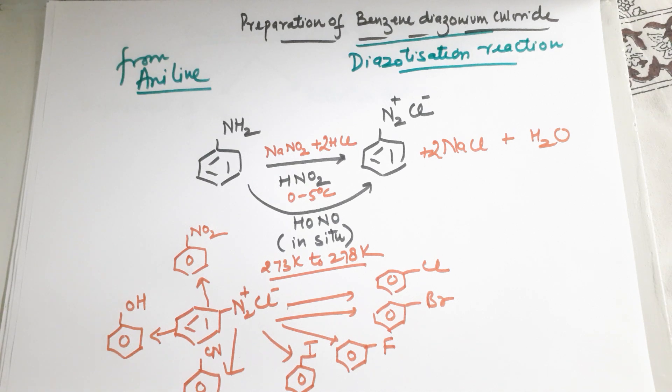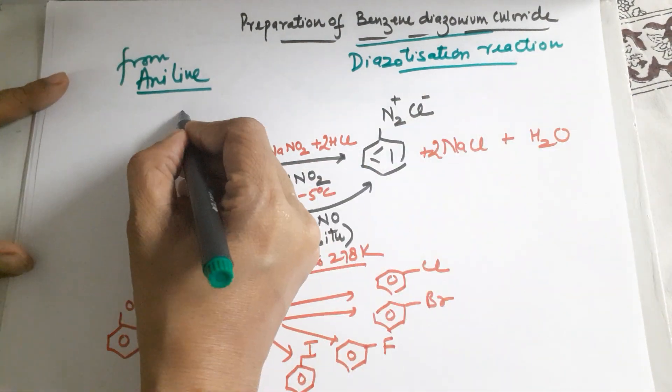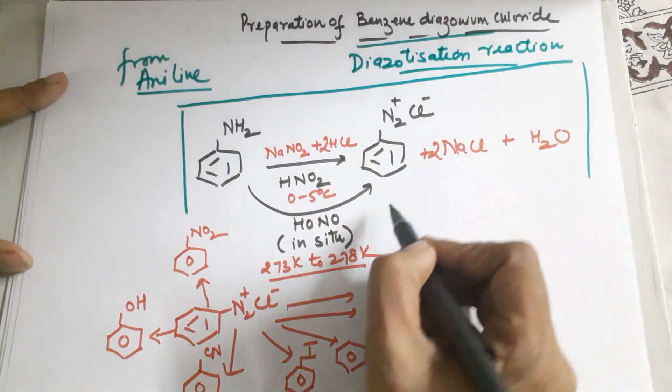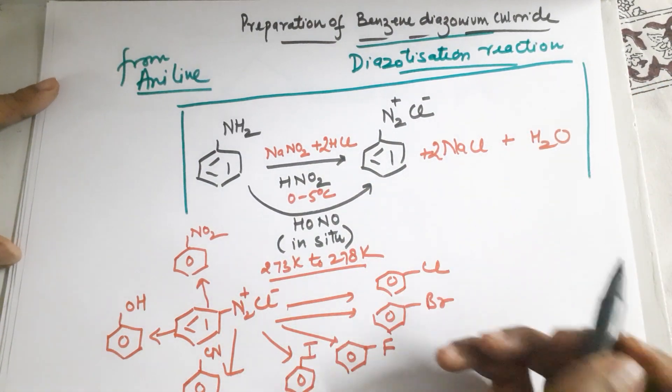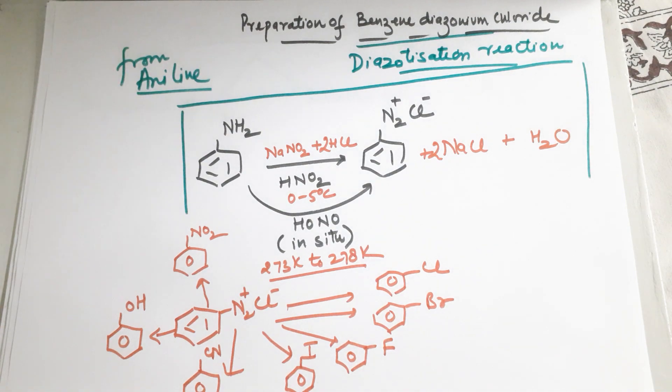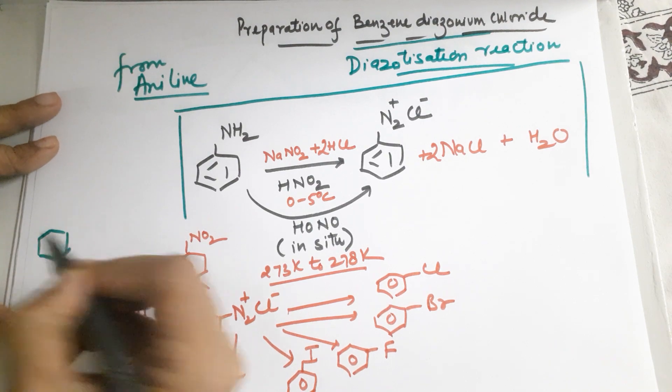Now if you are asked to write the diazotization reaction, you just have to show making benzene diazonium salt from aniline, that's all. But at times you get conversions, and sometimes the conversion comes where you prepare it from benzene.